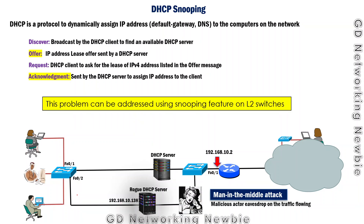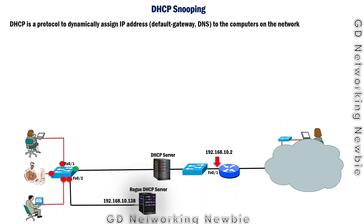This challenge can be addressed using the DHCP snooping feature on Layer 2 switches. With DHCP snooping, we classify the ports of the switch as trusted or untrusted. The port connected to the legitimate DHCP server or to other switches is configured as a trusted port. All ports connected to clients are classified as untrusted ports. Once the ports are configured as trusted and untrusted, the switch can protect the network.